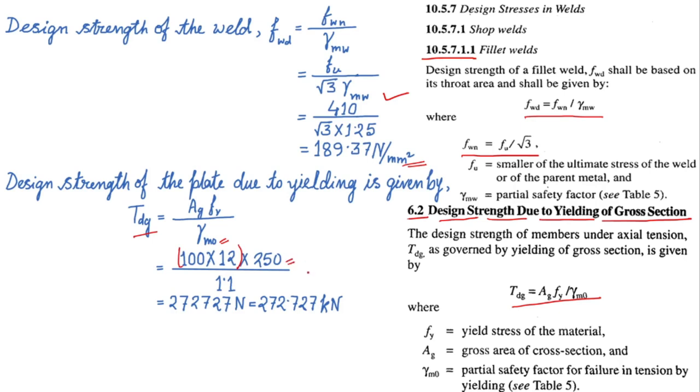Fy is the yield strength. And finally, we have got the value 272.727 kilonewton. This is the strength of the plate due to yielding.